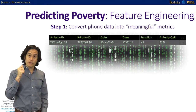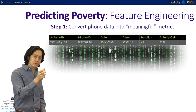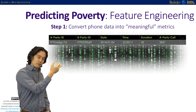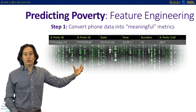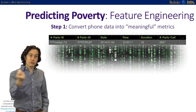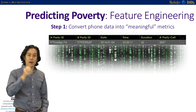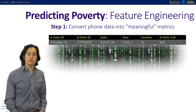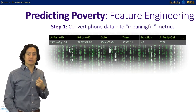Each transaction record has six or seven key fields: the identity of the person making the call, the identity of the person receiving it, the date and time, the duration, and some metadata. Importantly, we also know approximately the physical location of both parties during the call, because all events mediated by the cell phone network are routed through actual physical cell phone towers — and we know the location of those towers.